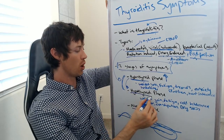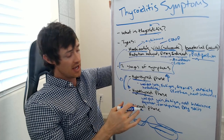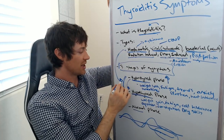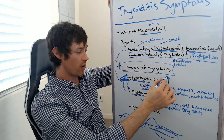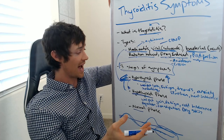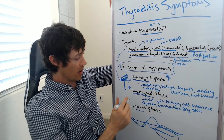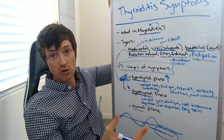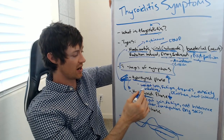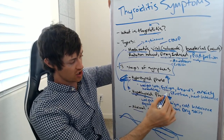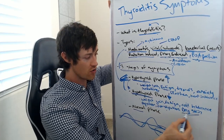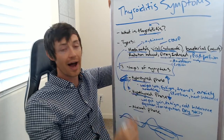The next phase is the hypothyroid phase. Almost every type of thyroiditis will have a hypothyroid phase — a phase in which the thyroid gland can no longer produce enough thyroid hormone. Using the car and gas pedal analogy: eventually the car runs out of gas and no matter how hard you press the pedal, nothing comes out. Hypothyroid symptoms are the exact opposite of hyperthyroid symptoms: instead of weight loss you have weight gain, cold intolerance instead of heat intolerance, depression instead of anxiety, constipation instead of diarrhea, and dry skin. Fatigue is shared by both.